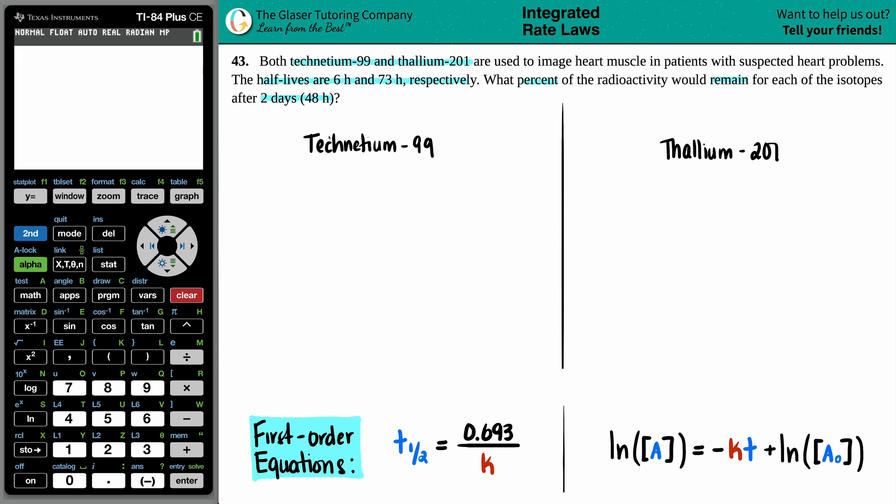So let's just write that out. So we have technetium. We have half-life of technetium is 6 hours, and the half-life of thallium is much longer, 73 hours. Beautiful.